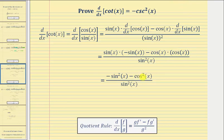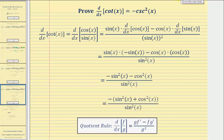From here, we'll factor a negative one out of the numerator. Once we do this, we have negative — or the opposite of the quantity sine squared x plus cosine squared x — all divided by sine squared x. And sine squared x plus cosine squared x is equal to one from a Pythagorean identity.